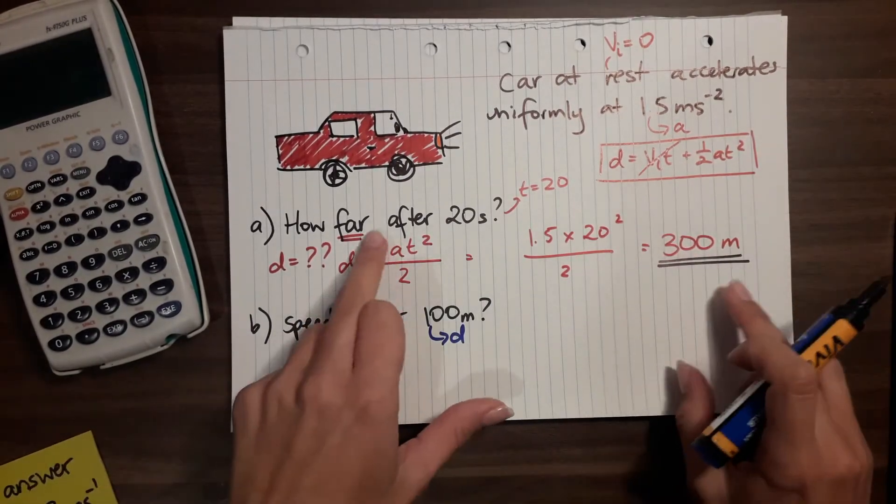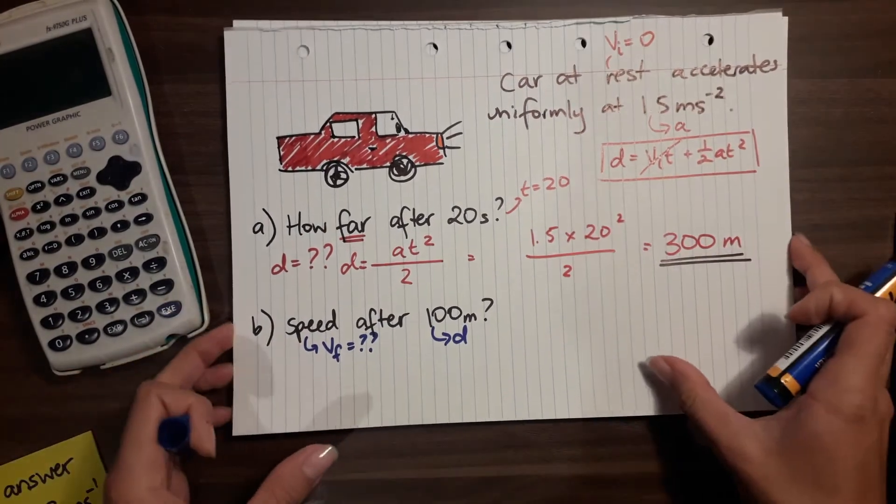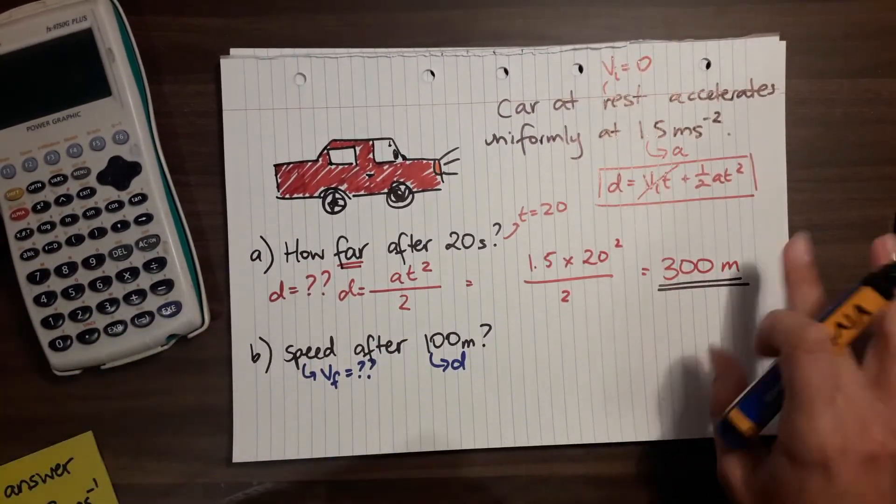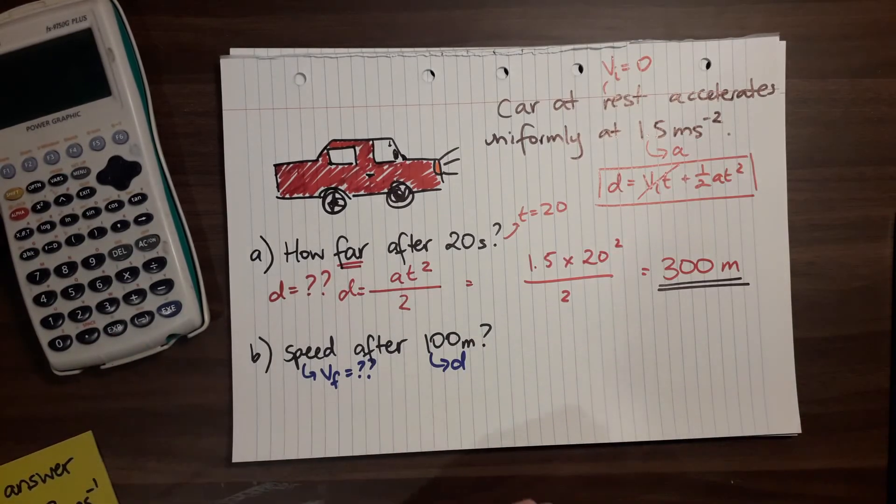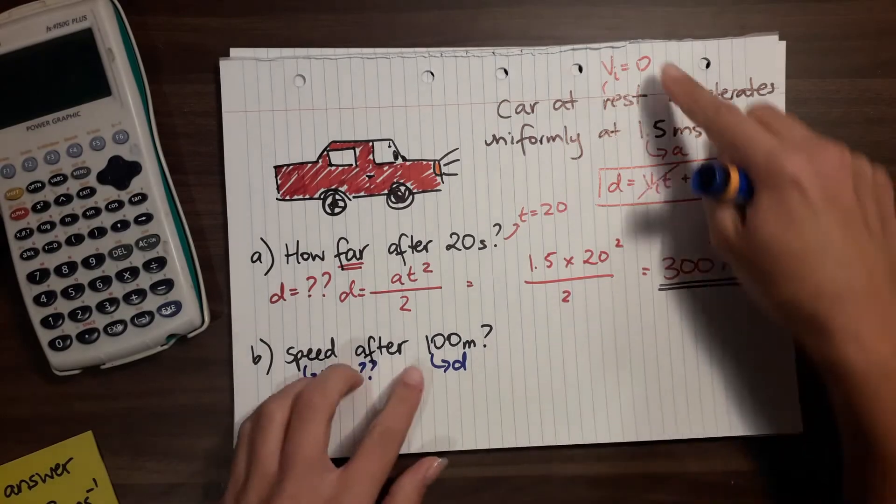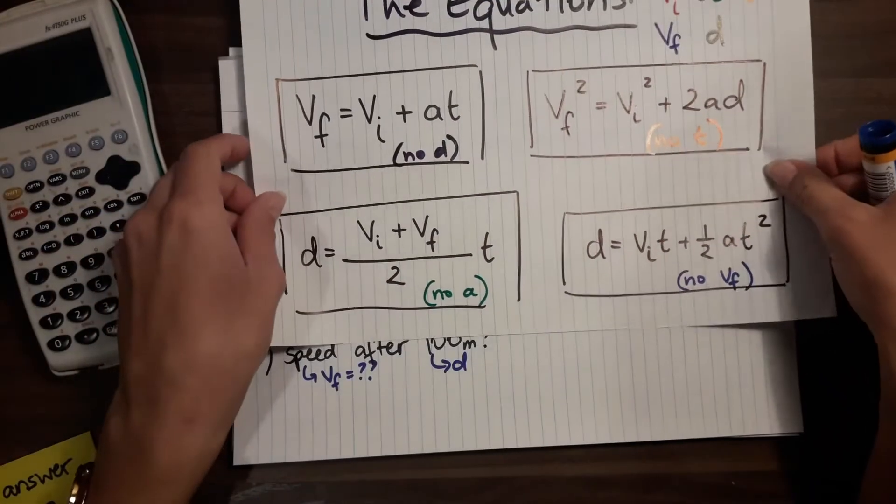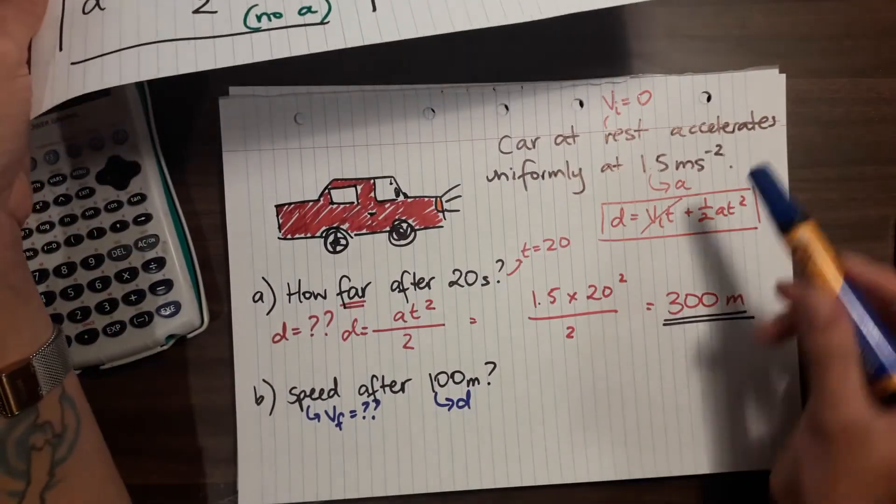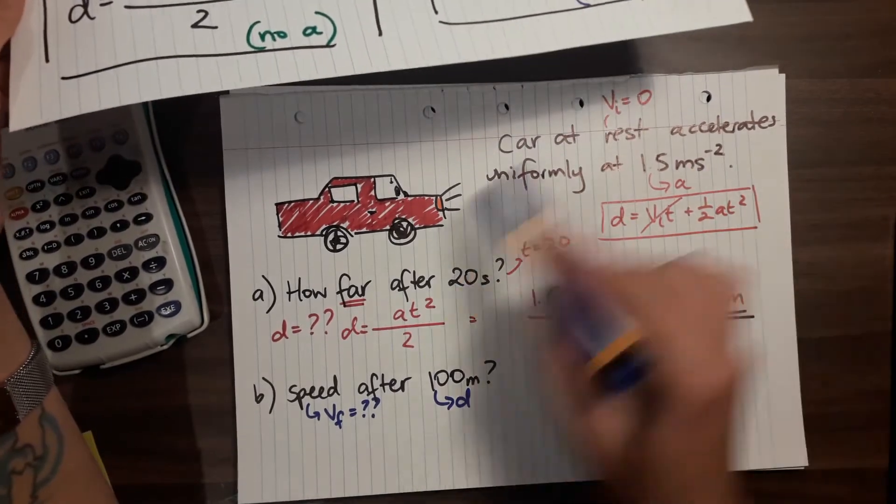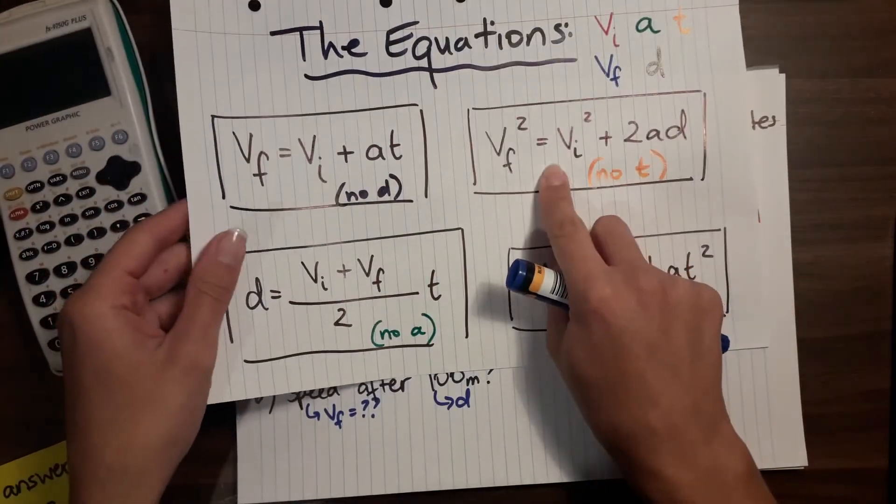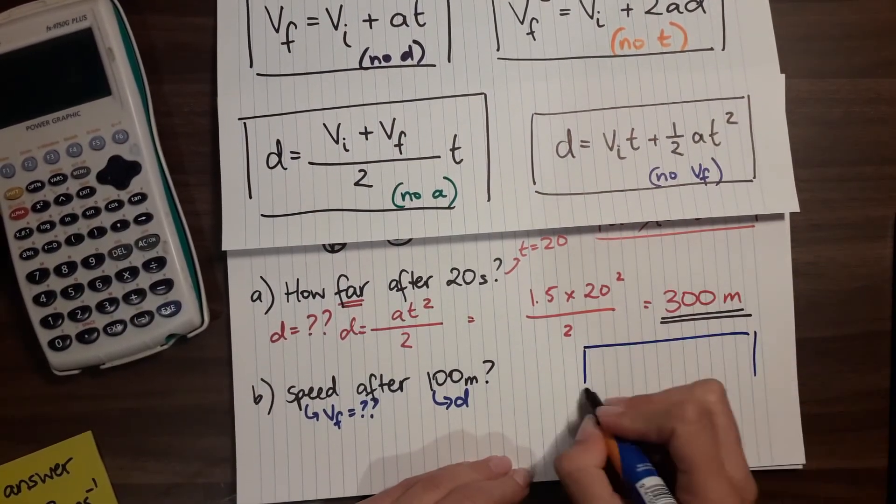You could use that information as well, but it's a bit annoying because sometimes you get rounding error, so I always like to use the information that I've been given at the start of the question. So looking at our equations, we need to find something that has Vi, Vf, a and d - so it actually doesn't have time. It would be this one here. So again I like to write it in so that I can use it next to me.